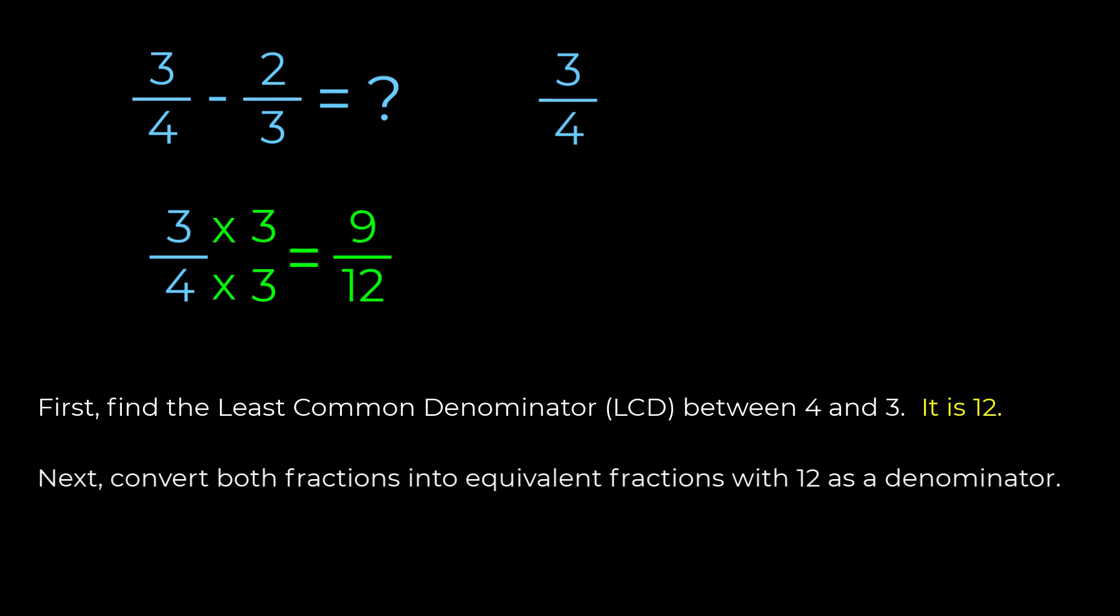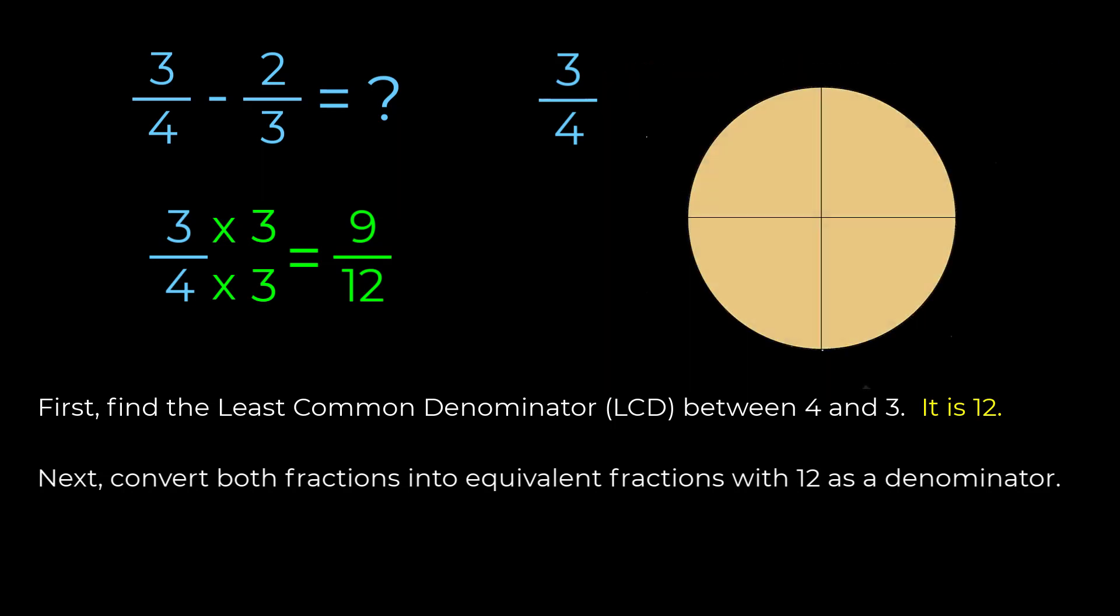So if I take a pizza which is cut into four pieces and cut it into twelve pieces instead, this really means that I am taking each quarter of a pizza and cutting it into three pieces.